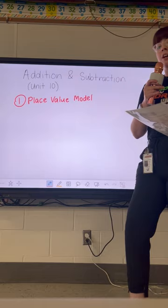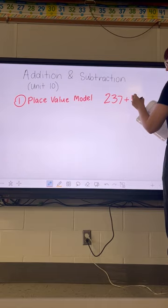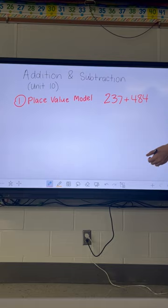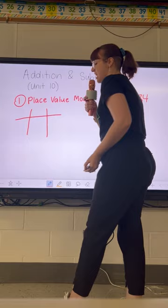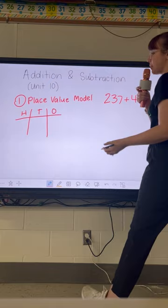Students can either write the numbers or draw, as I've written in the guide. The problem we're going to be using for all of these methods is 237 plus 484. So let's take a look at how they would use the place value model to solve this by writing out the number form. They're going to start with their hundreds, tens, and ones chart — it kind of looks like the top of a tic-tac-toe board — and we label it H for hundreds, T for tens, and O for ones.